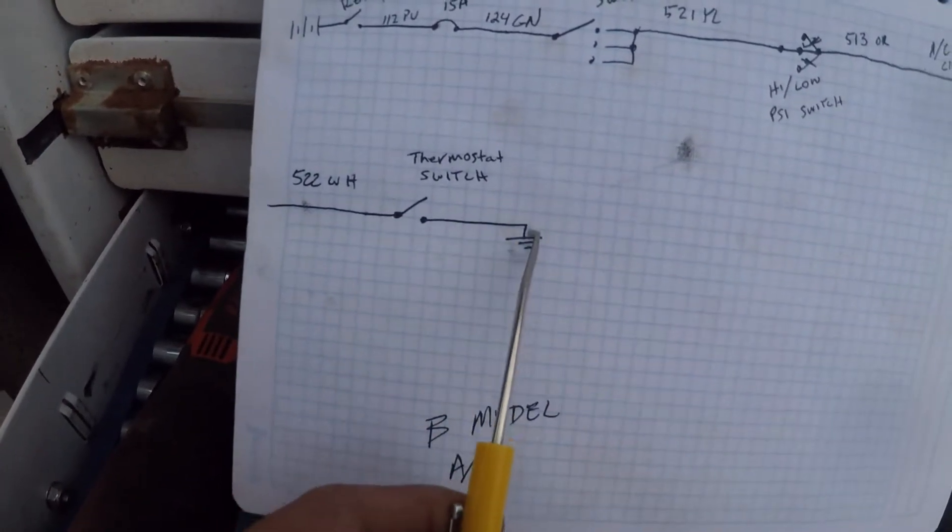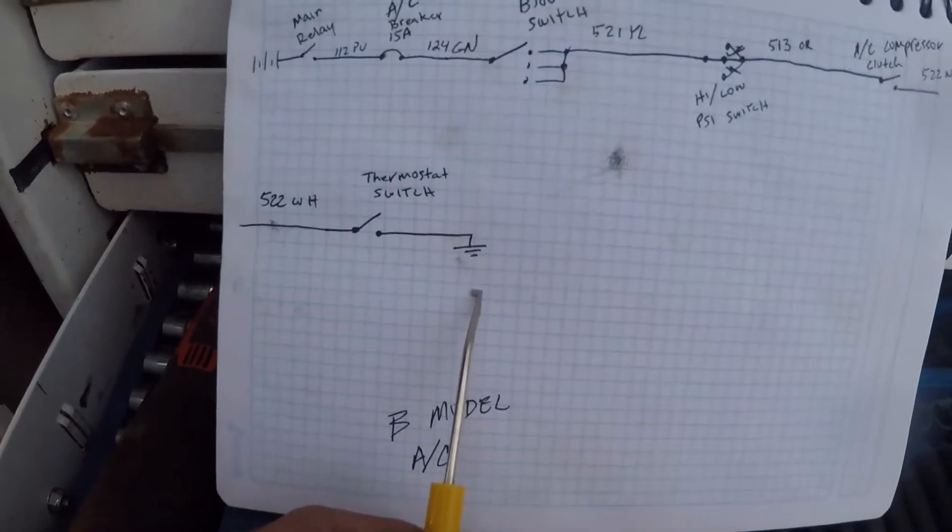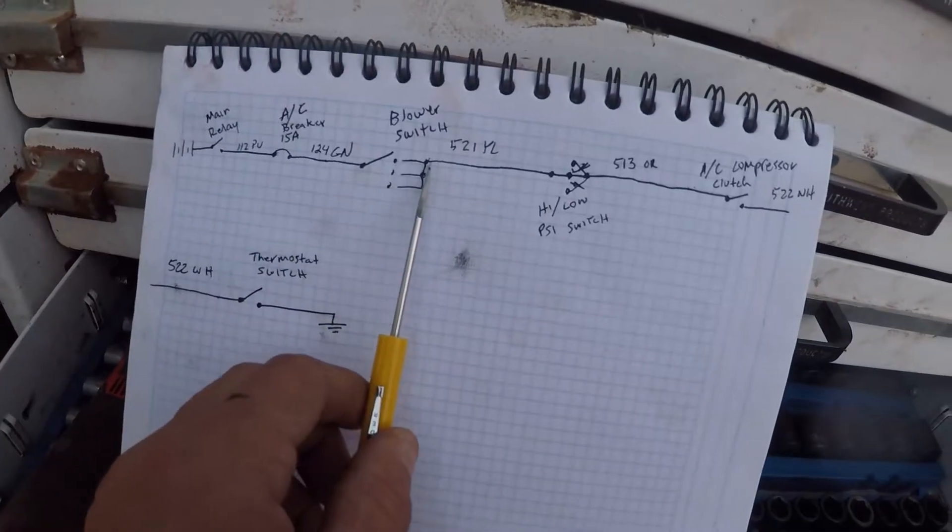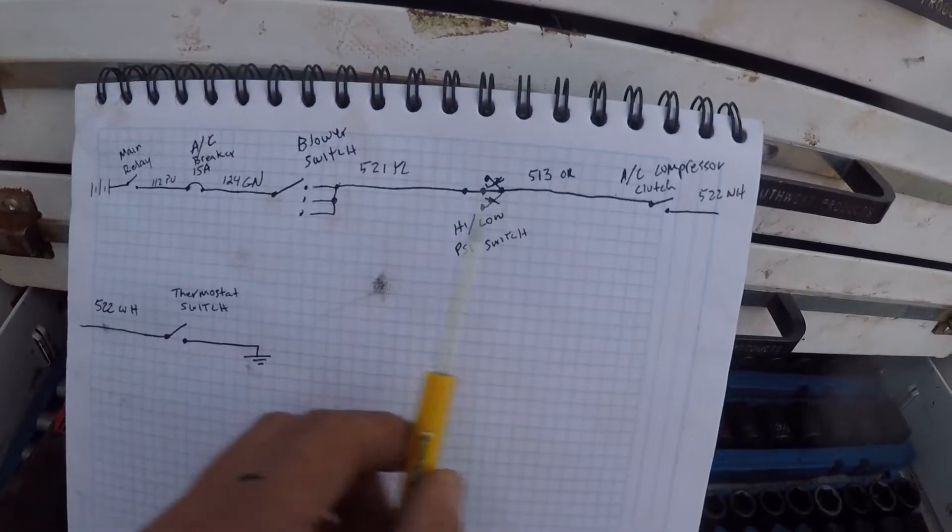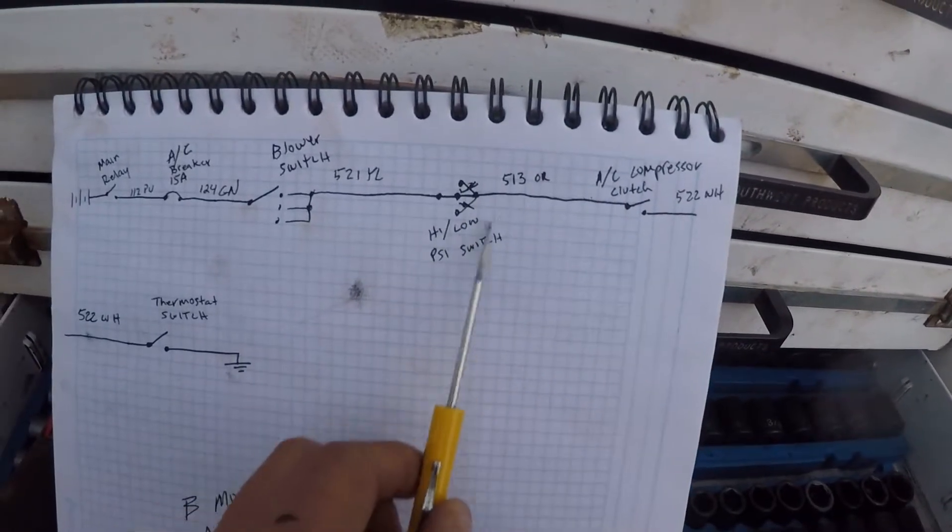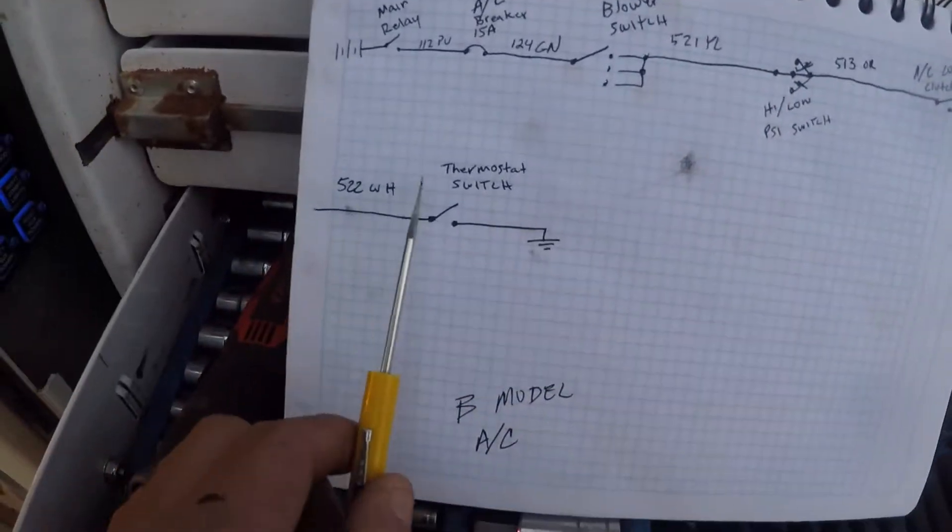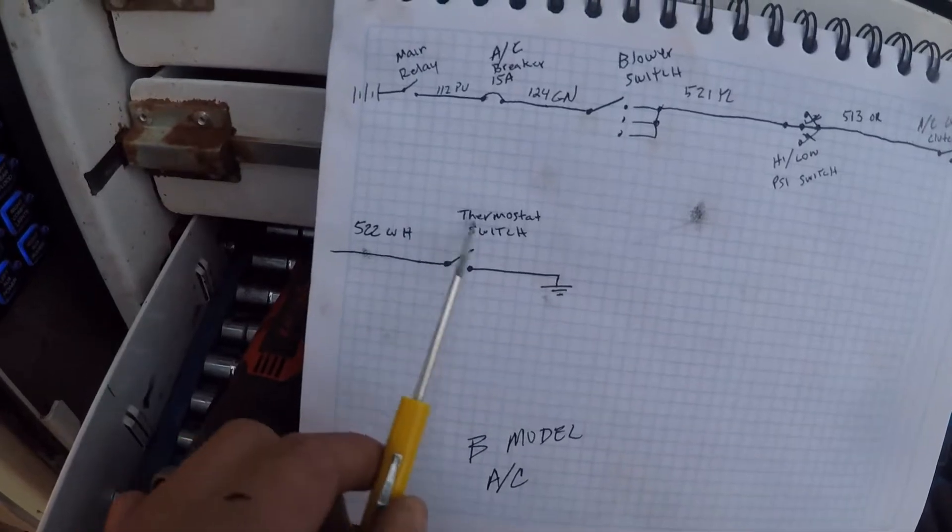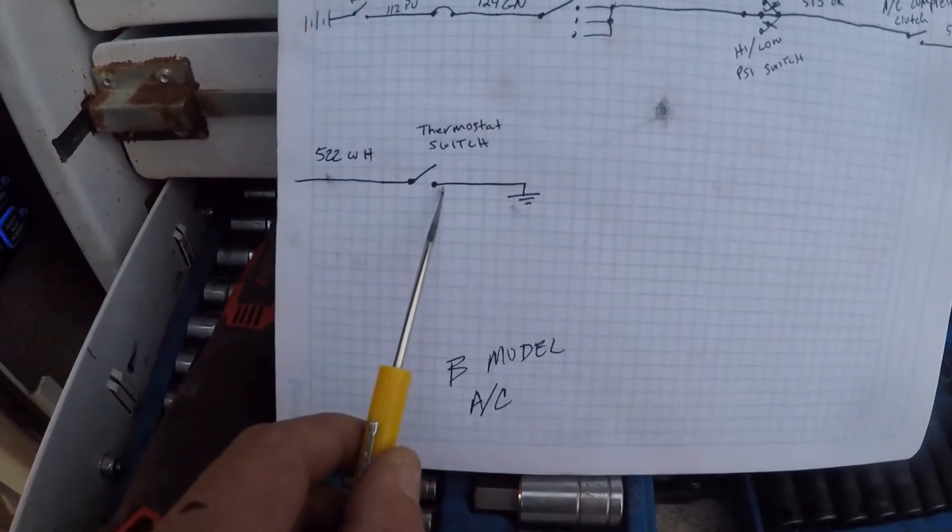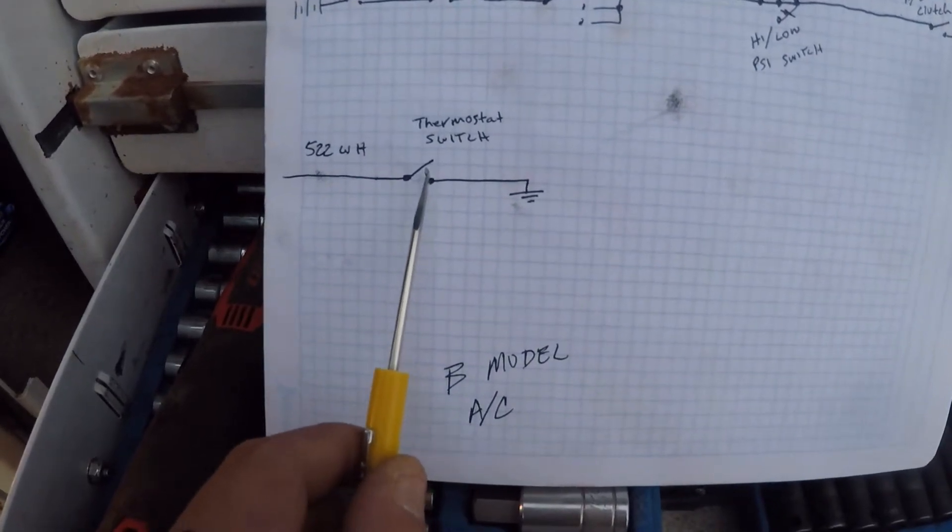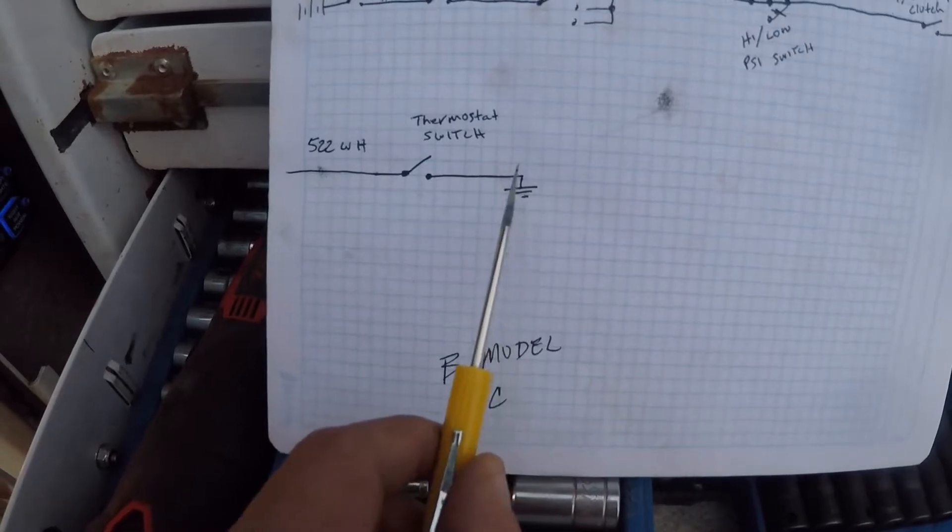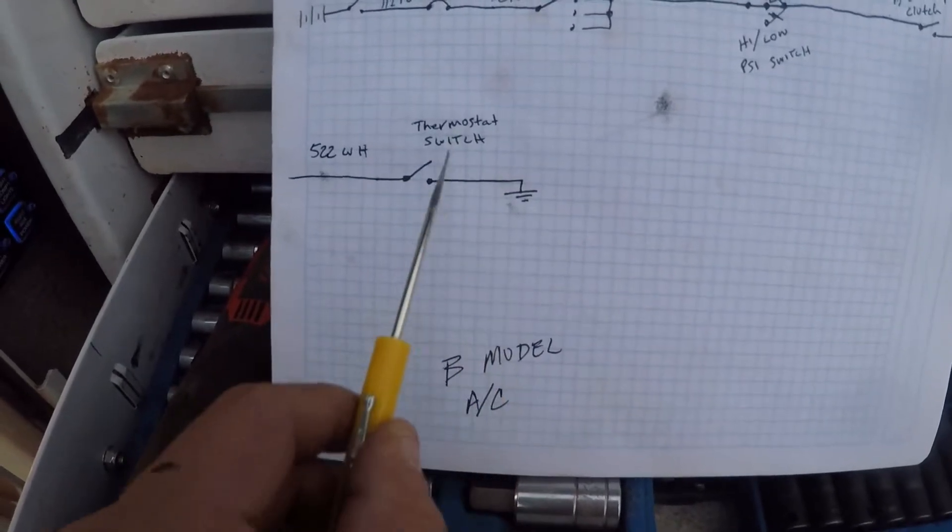After that thermostat switch, it's grounded. So now we know that coming from this main power relay, anywhere along the way we should have power. We should have power all the way through the clutch, we should have power through the high and low pressure switch, we should have power basically through the thermostat switch. And the reason we have power here is because the current has not found ground until after this thermostat switch. That's when it finds ground, so anywhere before this point it's going to be power.